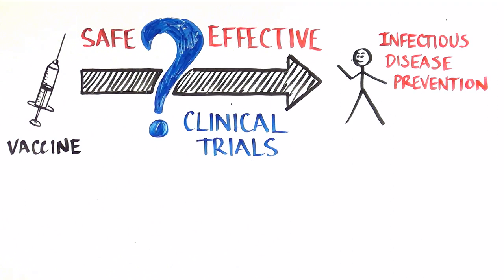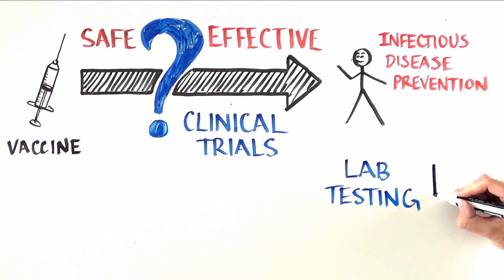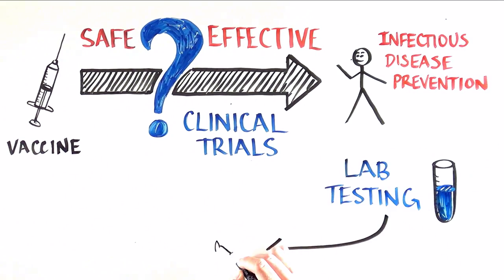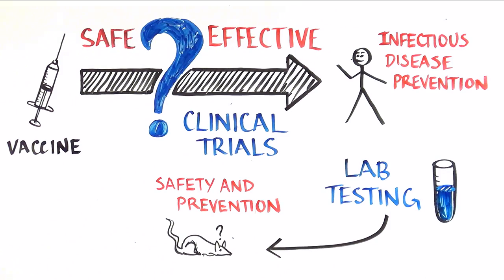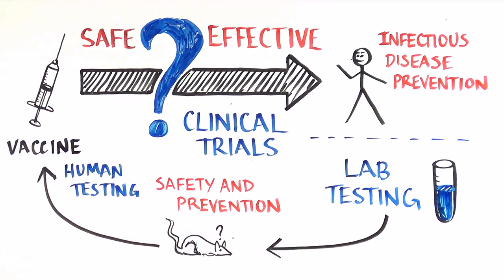The first thing to know is that a lot of testing is done before a vaccine ever gets tested in humans. There is a long process of development in the laboratory, and testing both for safety and for protection in animal studies. After we have a vaccine that looks both safe and promising in preventing infection in the laboratory, we begin testing in humans.